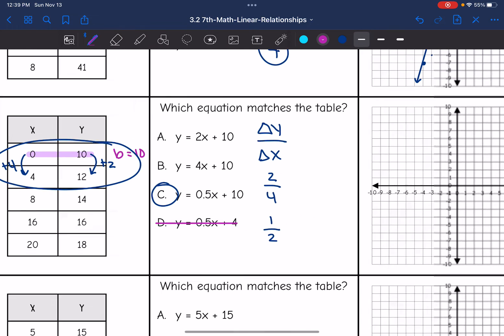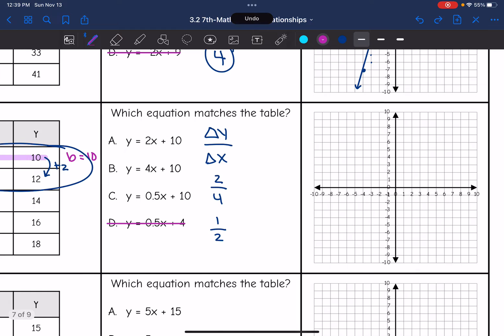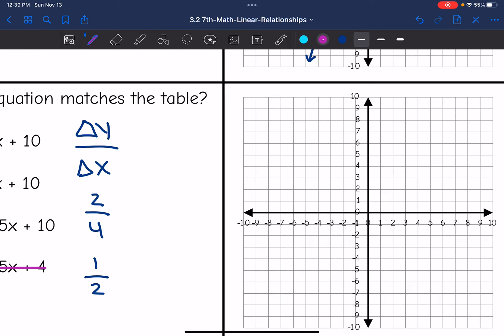And now I just need to graph this line. So I'm going to plot my y-intercept at 10. And then my rate of change was one half. So typically that means I would increase one in the y values and then increase two in the x values, but there's no room to do that. So I'm going to go backwards and I'm going to decrease one in the y values and decrease two in the x values. I'll continue that pattern, and now I'm able to draw my line.